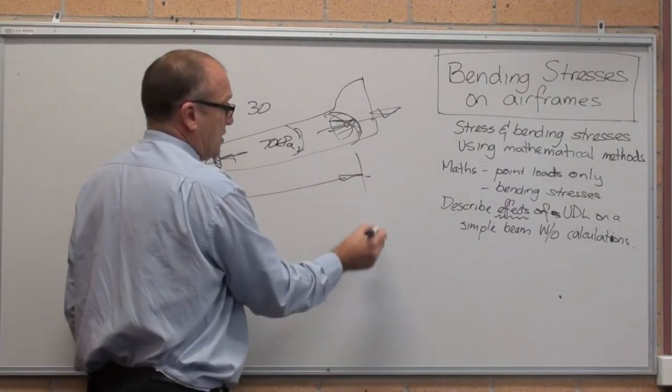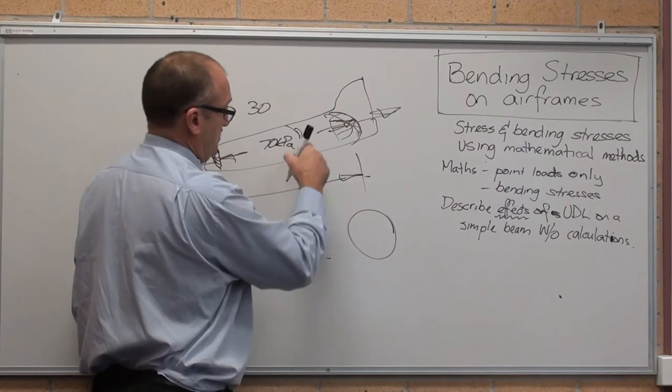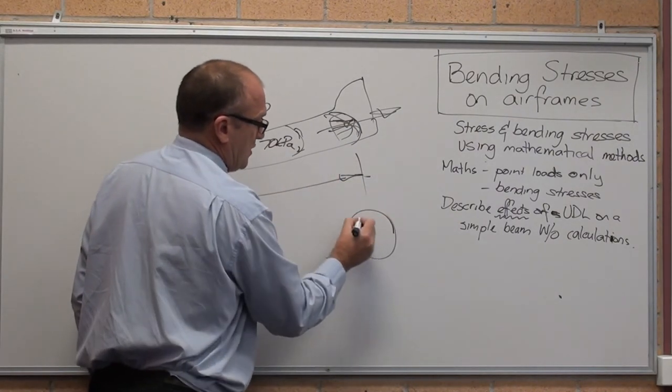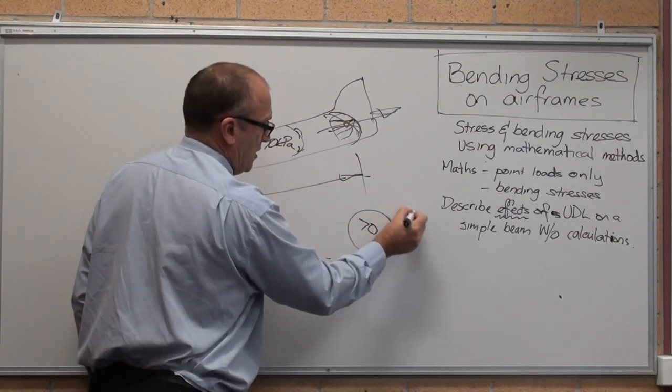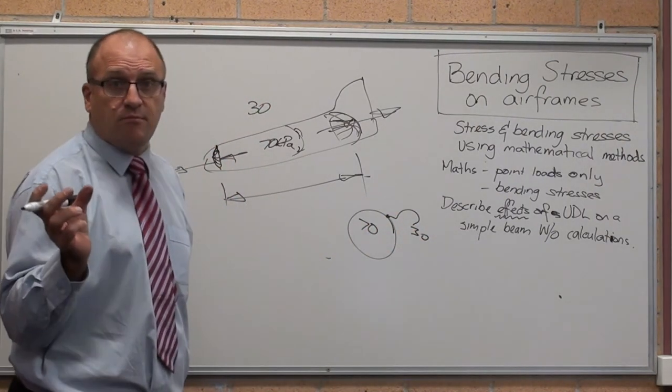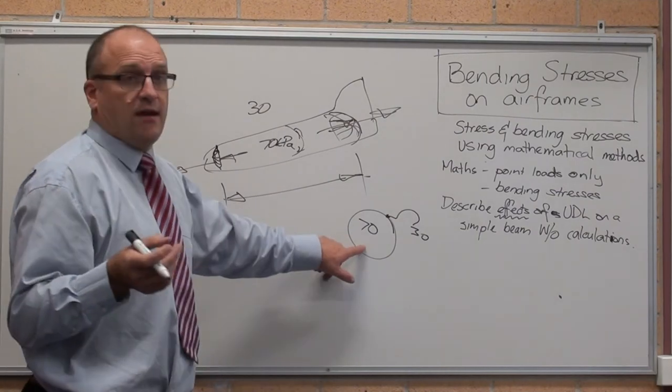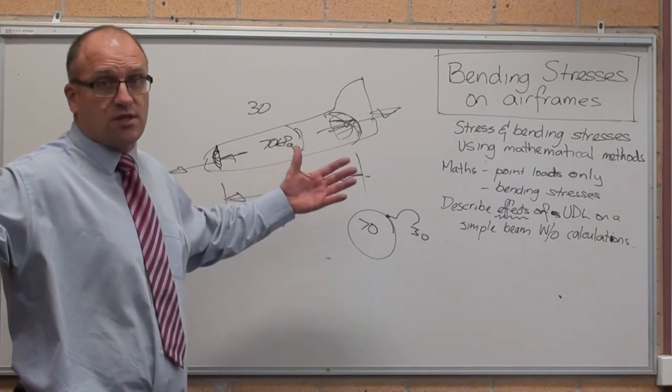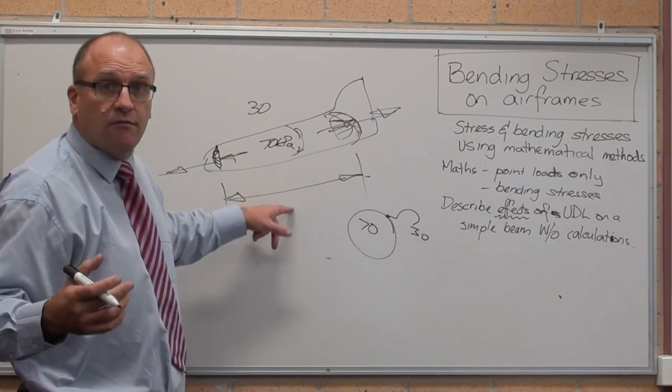If you've got the pressure difference acting on a circle, on this side it's 70, on the reverse side it's 30. You can calculate the difference in pressure across that as 40. You've got the area, you can calculate the force that's extending the skin of the aircraft.